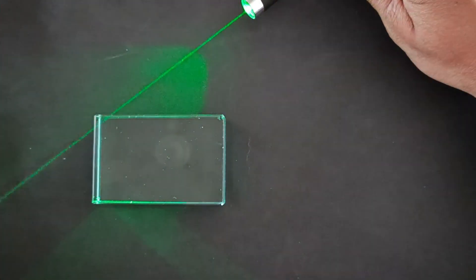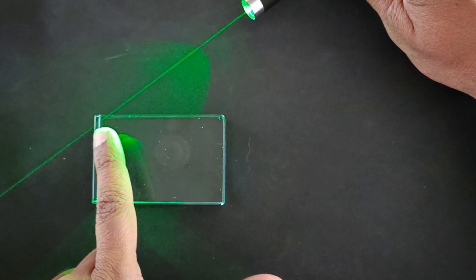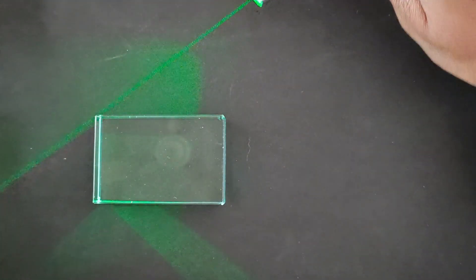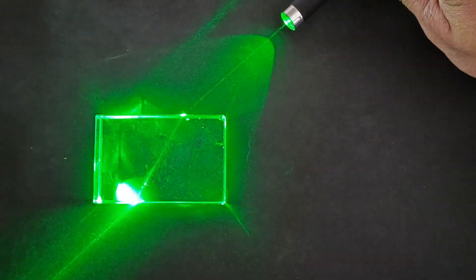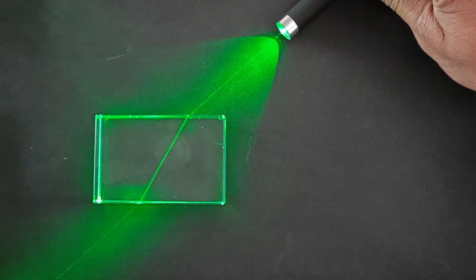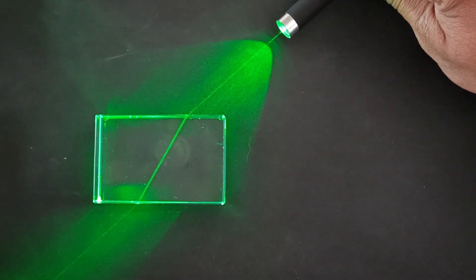For this demonstration I have taken two glass slabs of different thicknesses, a green laser light, and black paper to view the laser light properly. In absence of black paper it would be difficult to see the laser beam in different backgrounds.